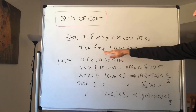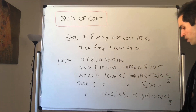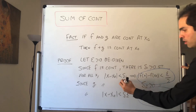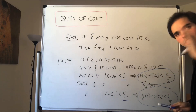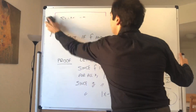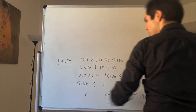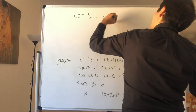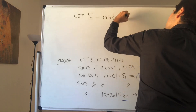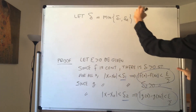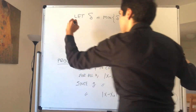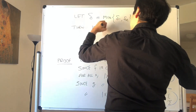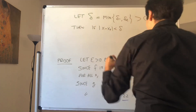Now what can we do with f plus g? Since we want both of those things to hold, we need to choose the smaller one of delta 1 and delta 2 — we want both things to be true at the same time. So let delta be the minimum of delta 1 and delta 2. The smaller of two positive numbers is still positive. Then for all x, if |x minus x naught| is less than delta, both things are true.